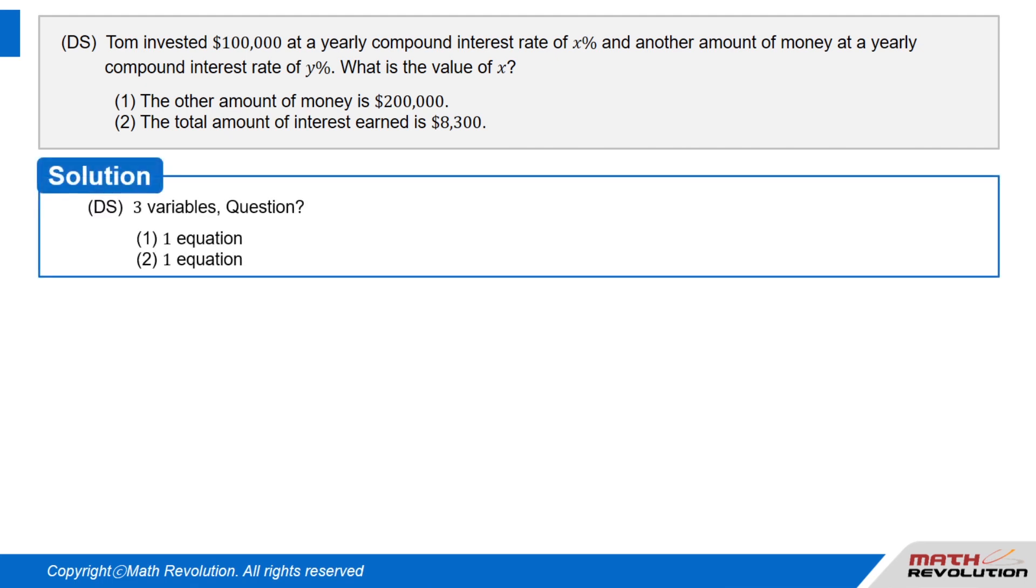Solution. Now we will solve this DS question using the variable approach. DS: Three variables. Question? Condition 1: One equation. Condition 2: One equation.